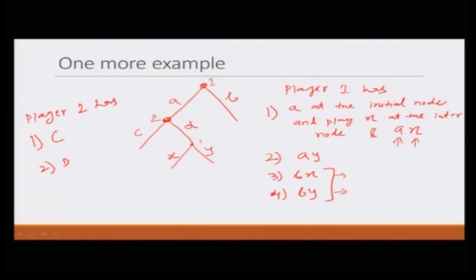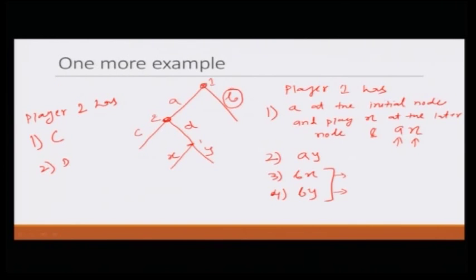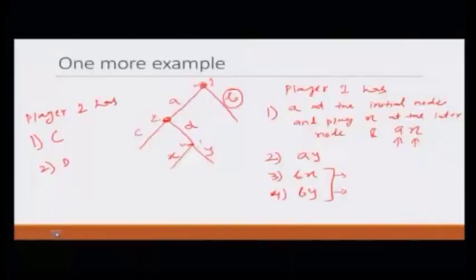Now, let us come back to the question that may be bothering you: why does player one have four strategies? You might be thinking that if player one takes action b at the beginning, why do we need to think about what he would do at the later node, since if he takes action b, the game would end anyway? Let me give you different justifications for this. One justification is very simple: by definition, the strategy of a player is a rule that describes what action he is supposed to take at each decision node belonging to him.